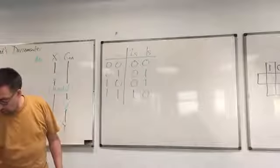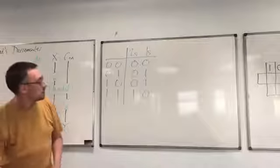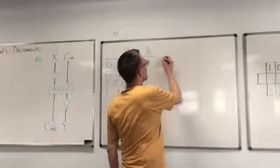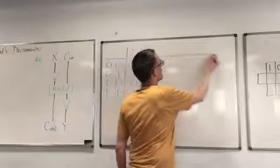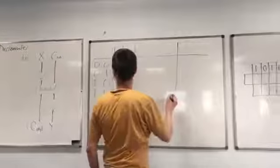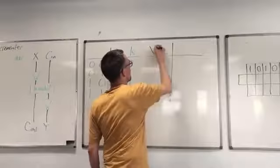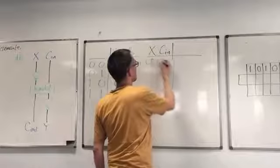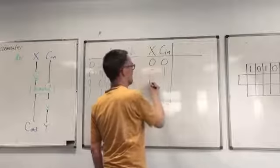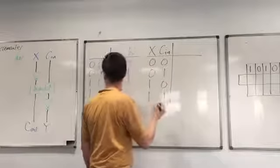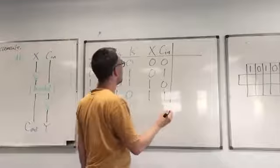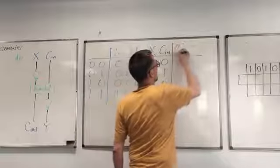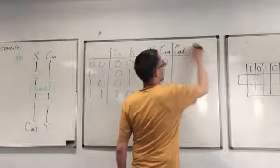Now we're ready to figure out what Desmond's decrementor does. It has two inputs x and c, which we can tabulate as 0,0 then 0,1 then 1,0 then 1,1, and then we can figure out what the outputs are.